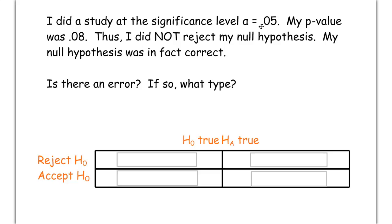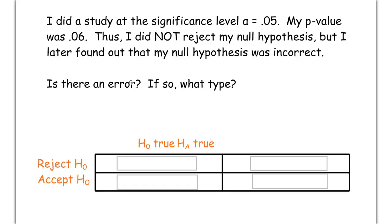I did a study at significance level alpha is 0.05. My p-value was 0.08. Alpha was higher, so I did not reject. And here it tells us, thus, I did not reject my null hypothesis. My null was, in fact, correct. So, you did not reject. You could say you've accepted. You did not reject and the null was true. That sounds to me like you did the right thing. You should not reject it when it's true. So, that was a correct decision. No errors involved.